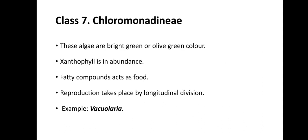Class 7 is Chloromonadini. These algae are bright green or olive-green in color. Xanthophyll is present in excess amount. Fatty compounds act as food reserve material. Reproduction takes place by longitudinal division. For example, Vacuolaria.